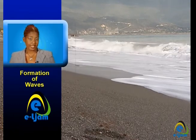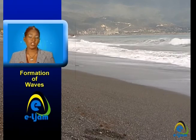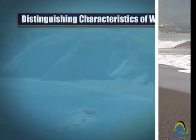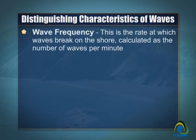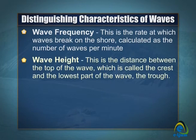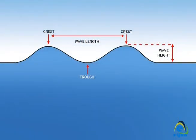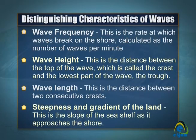The characteristics that distinguish these two wave forms from each other include: wave frequency — the rate at which waves break on the shore; wave height — the distance between the top of the wave, called the crest, and the lowest part of the wave, the trough; wave length — the distance between two consecutive crests; and steepness and gradient of the land — the slope of the seabed as it approaches the shore.